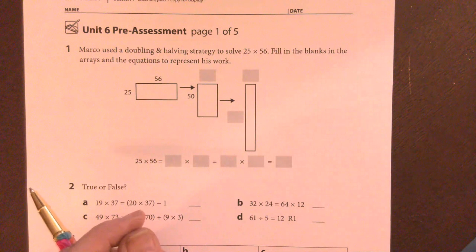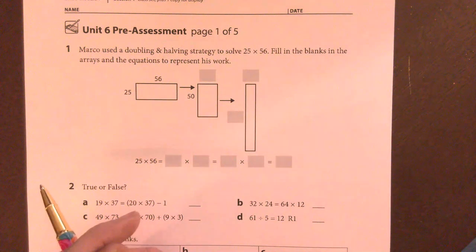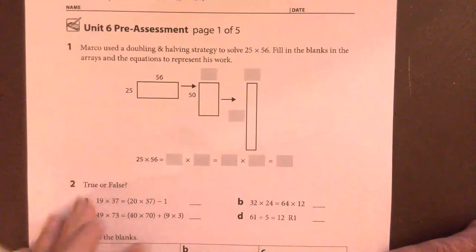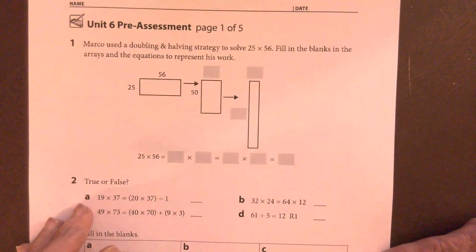For number one, Marco used a doubling and halving strategy to solve 25 times 56. Fill in the blanks in the arrays and the equations to represent his work.